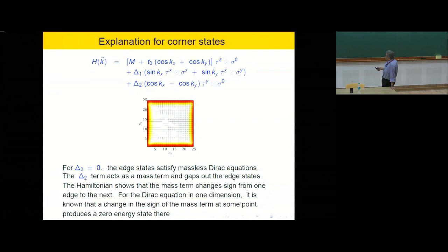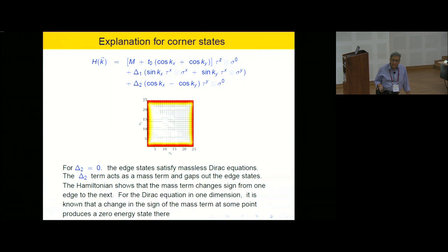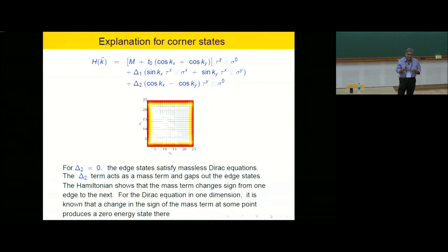Here's a rough explanation for why you have corner states. For delta_2 equal to 0, this is the usual BHZ model, so the edge states satisfy massless Dirac equations on each of the edges. The delta_2 term acts as a mass term and gaps out the edge states, but it has opposite signs on the x edges and the y edges. So when you go around the corner from one edge to the next, this mass term changes sign. It's well known that if you have a Dirac equation in one dimension with a mass term that changes sign somewhere, you'll get a zero-energy mode bound around that point. That's basically the reason why you have corner states in this model.